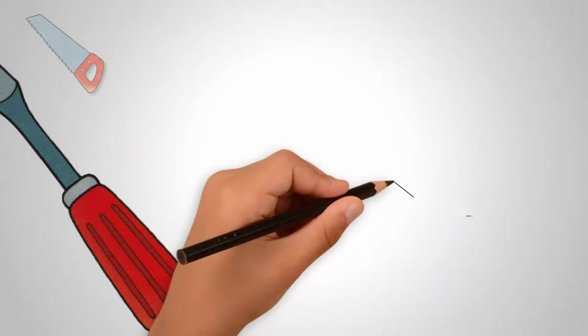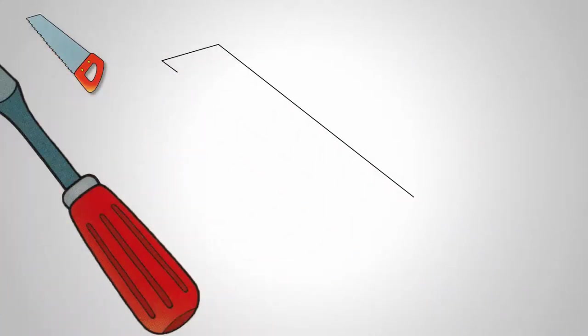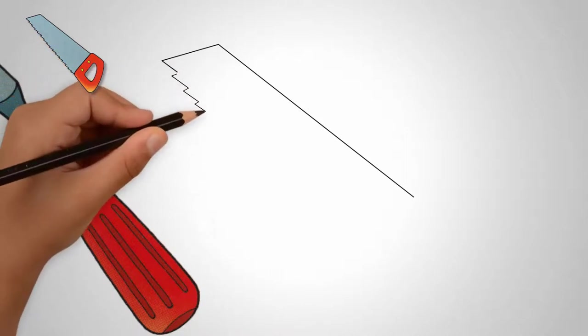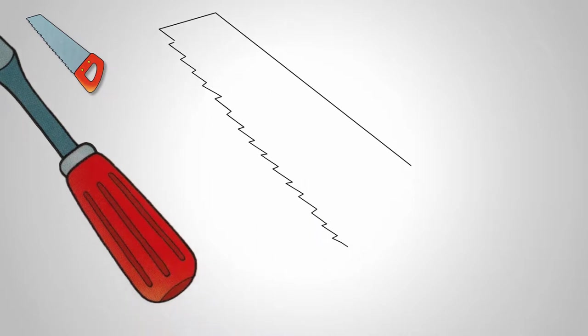Draw a saw or hacksaw. Draw a straight line. Draw another line at right angles. In short. From a short line draw the teeth of the saw. They are sharp and there are many of them.